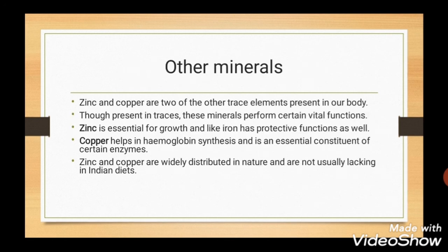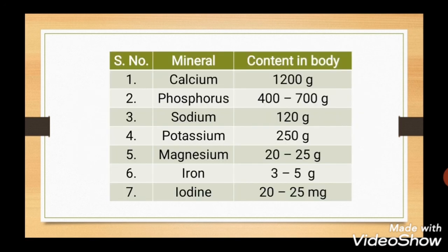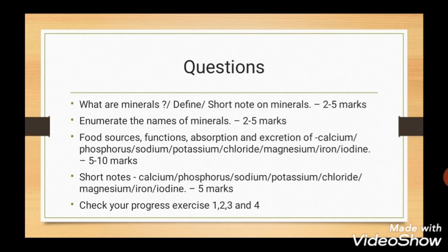Other trace minerals are zinc and copper. These are present in trace amounts in the body but perform certain vital functions. Zinc is essential for growth and, like iron, has a protective function as well. Copper helps in hemoglobin synthesis and is an essential constituent of certain enzymes. Zinc and copper are widely distributed in nature and are present in the Indian diet. For quick reference, you can use the chart on minerals. These are the questions for this unit — also go through the questions given in check your progress exercises 1, 2, 3 and 4. In the next video, we will study unit 6: planning balanced diets.